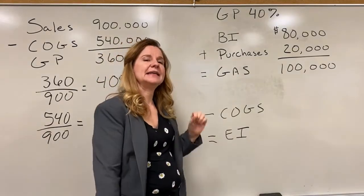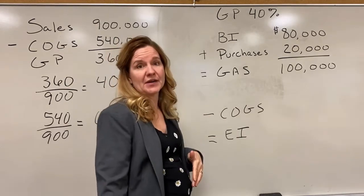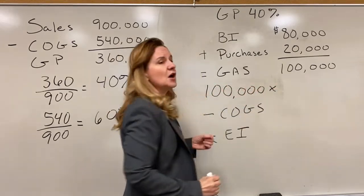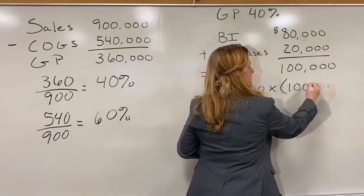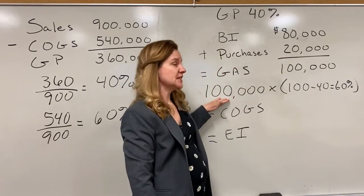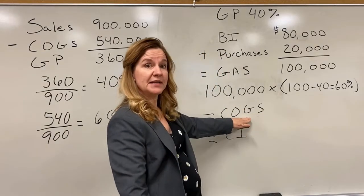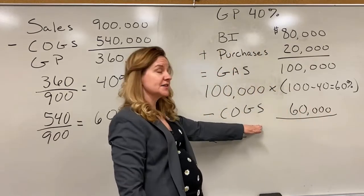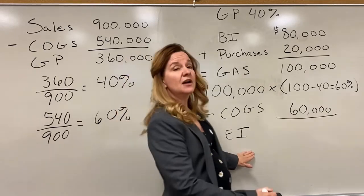Now let's calculate estimated cost of goods sold. Sales were $100,000 in this example. We know our gross profit percentage is 40%, so we take 100 minus 40, which gives us 60%. We multiply the $100,000 in sales by 60%, giving us estimated cost of goods sold of $60,000. Subtracting that from goods available for sale gives us an estimated ending inventory of $40,000.